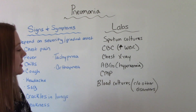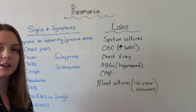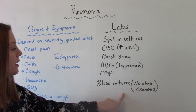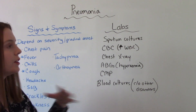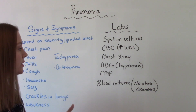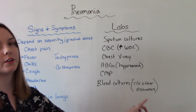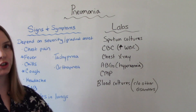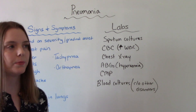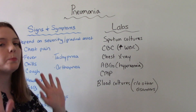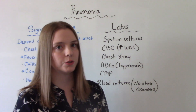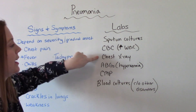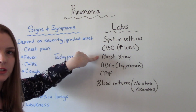A CMP gives us those fluid and electrolyte balances we want to know. And then blood cultures — usually these are done to rule out other causes and confirm that this is pneumonia. The two big ones that are done as standard are the sputum cultures and the chest x-ray.